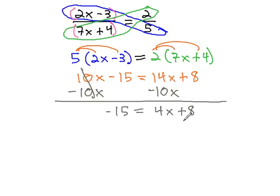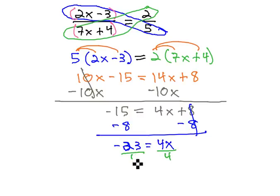Now, we have a simple two-step equation where we can subtract 8 from both sides to get negative 23 equals 4x, and finally divide both sides by 4 to get x is equal to the fraction negative 23 over 4.